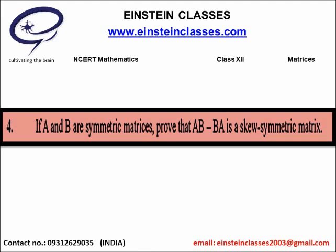Let us summarize the whole thing. First, what we have to prove: we have to prove that the transpose of matrix AB minus BA equals minus of AB minus BA. The given quantities are: the transpose of A equals A, and the transpose of B equals B. Now take the approach accordingly.